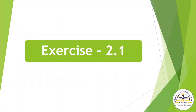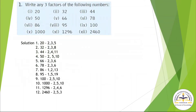Now let's start Exercise No. 2.1. Write any 3 factors of the following numbers. First, 20. We have to write factors of 20 in which we get no remainder. If we divide by 2, we get remainder 0. If we divide by 3, we get remainder 0, and similarly 5. So the factors of 20 are 2, 3, 5. Now 32: factors are 2, 3, 8. In the same manner, you have to solve these questions.